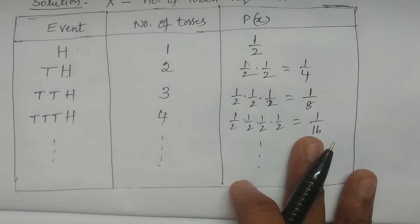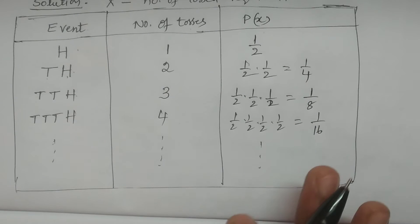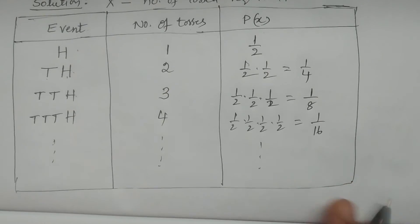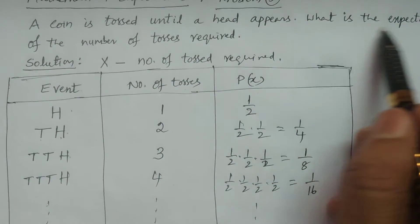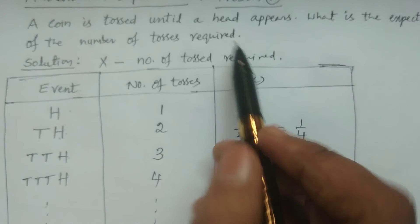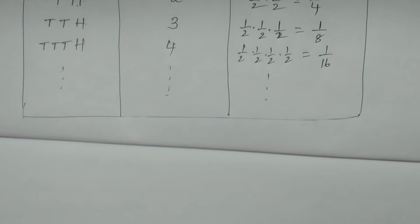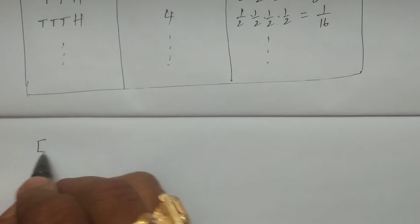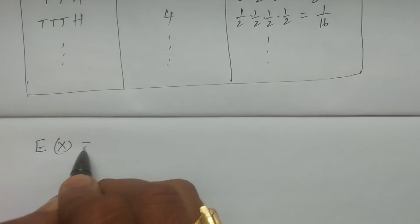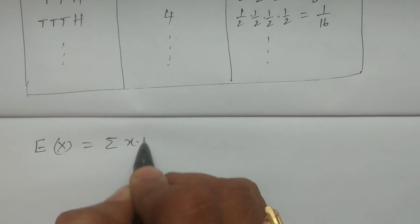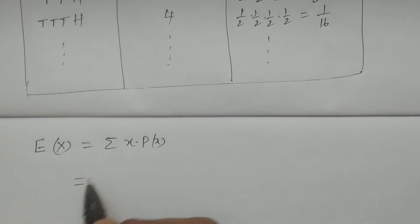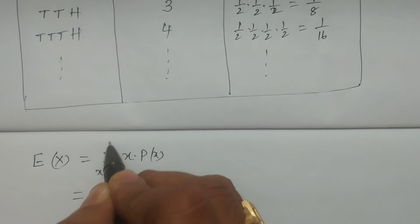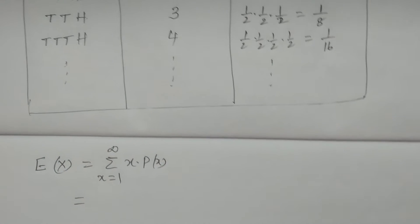This is what is required to calculate our mathematical expectation — that is, what is the expectation of the number of tosses required. Now, expectation of X is nothing but summation of x times P(x), where x ranges from 1 to infinity.